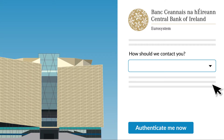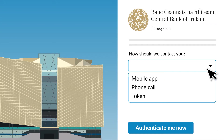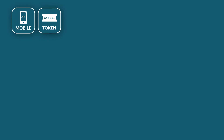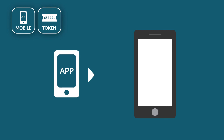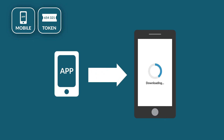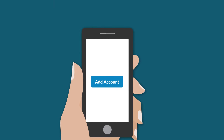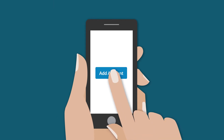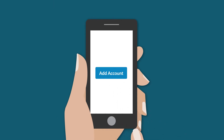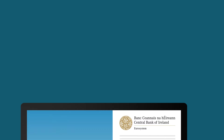For the best user experience we recommend choosing the mobile app. If you choose the mobile app or token you will first need to download the Microsoft Authenticator app from your relevant app store. Next you will need to follow instructions on the app to link your login details with your mobile device.